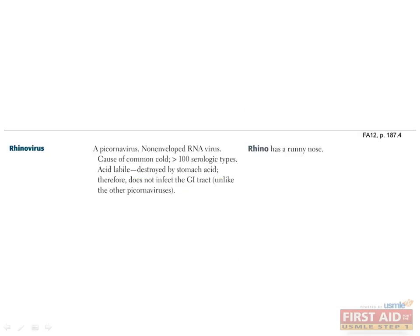Rhinovirus is a member of the picornavirus family and is the number one cause of the common cold. There are greater than 100 serologic types of rhinovirus, with clinical diagnosis made by symptoms. Unlike the other picornaviruses, rhinovirus is acid labile, meaning it can be destroyed by stomach acid. Therefore, while the other picornaviruses can spread by the fecal-oral route and infect through the GI system, rhinovirus is an exception in that it is transmitted via respiratory droplets and direct person-to-person contact.